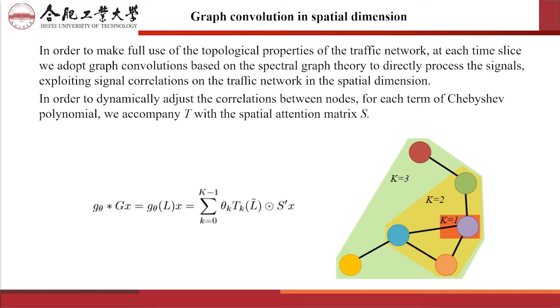At each time slice, we adopt graph convolutions based on the spectral graph theory to directly process the signal, exporting signal corrections on the traffic network in the spatial dimension. In order to dynamically adjust the correlations between nodes for each term of Chebyshev polynomial, we combine it with the spatial attention matrix S.